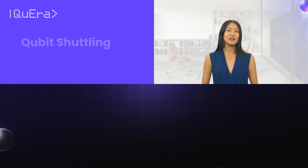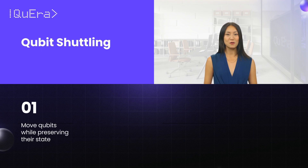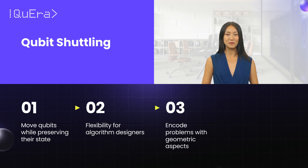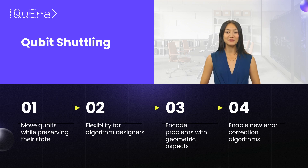In summary, qubit shuttling is the ability to move qubits while preserving their quantum state. It offers new degrees of flexibility to algorithm designers, enables the quantum encoding of problems with a geometric aspect, and opens the door to new error correction algorithms.